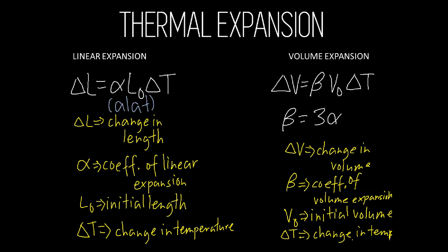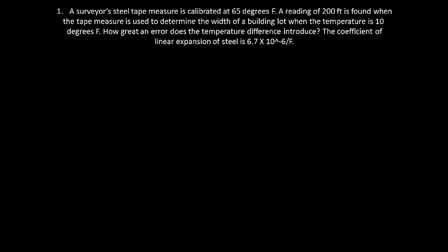Now we're going to solve some problems involving thermal expansion. The first problem: a surveyor's steel tape measure is calibrated at 65 degrees Fahrenheit. A reading of 200 feet is found when the tape measure is used to determine the width of a building lot when the temperature is 10 degrees Fahrenheit. How great an error does the temperature difference introduce? The coefficient of linear expansion of steel is 6.7 times 10 raised to negative 6 per degree Fahrenheit.